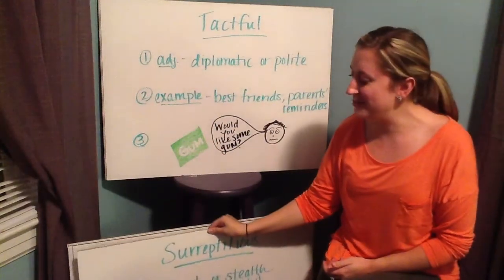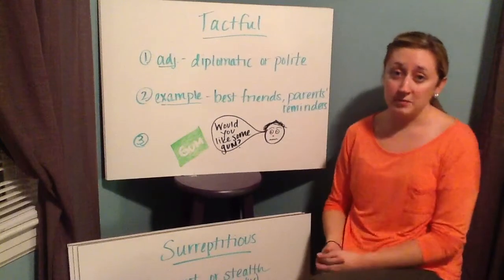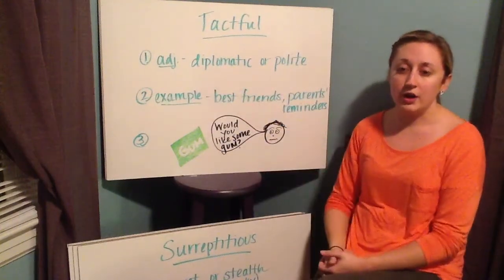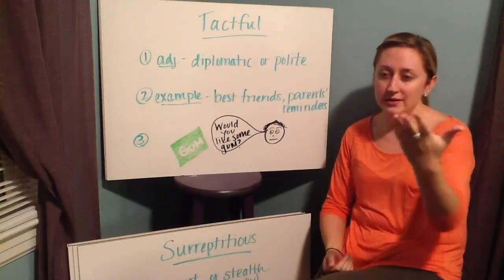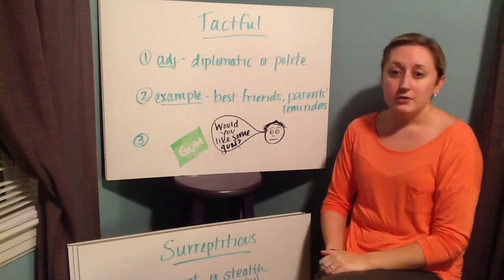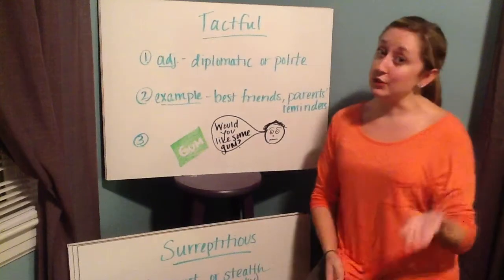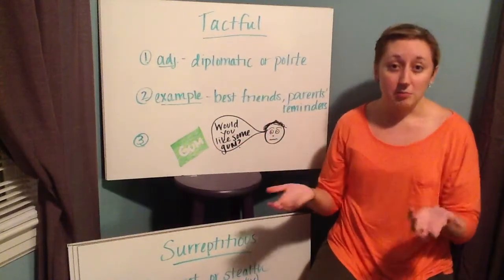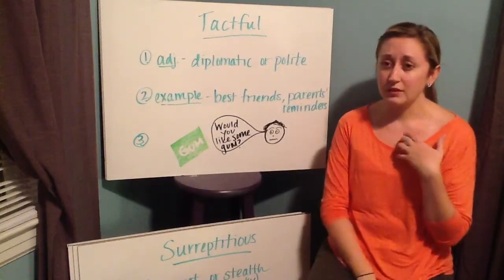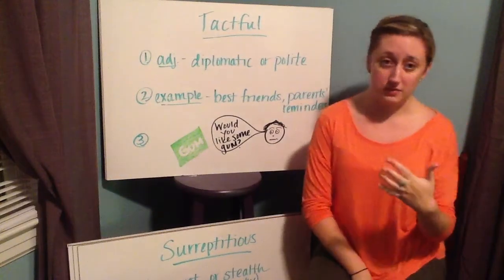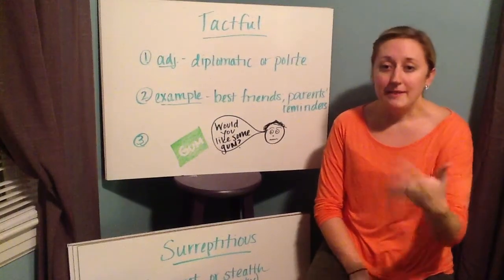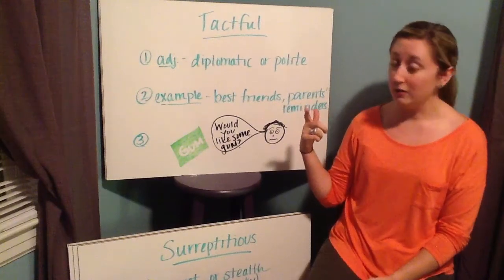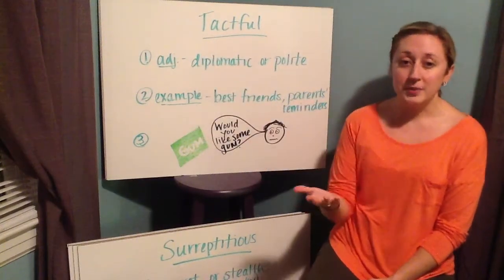Your next word is tactful, and I'm sure at some point a teacher, parent, or family member has asked you to be more tactful. It's an adjective that means diplomatic or polite. If a politician is trying to express something they're angry about, they don't just say "I hate that person" — they say "I disagree with them because of these points." Tactful means you find a more polite way of expressing yourself. Your best friends will hopefully find a way to tell you the truth about an outfit tactfully, like "maybe that's not the most flattering thing you've ever put on." Parents remind us: if you can't say anything nice, don't say anything at all.